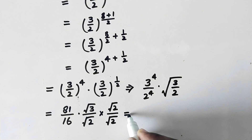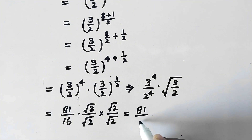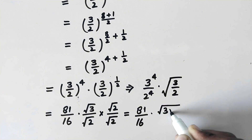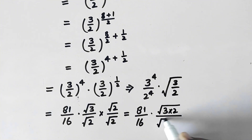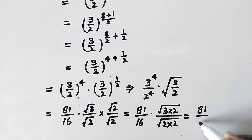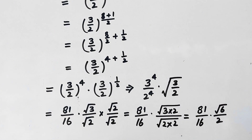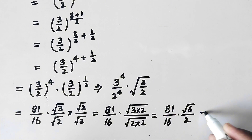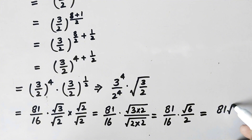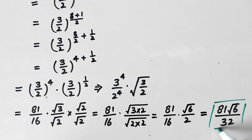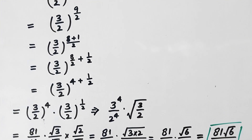So now this will be equal to 81 divided by 16 times square root of 2 times 3, that will be equal to 81 divided by 16 times square root of 6 divided by 2. And now this will be equal to 81 times square root of 6 divided by 32, and that is our final simplified answer. We can also solve this problem by another method.